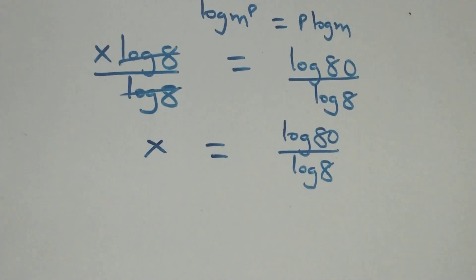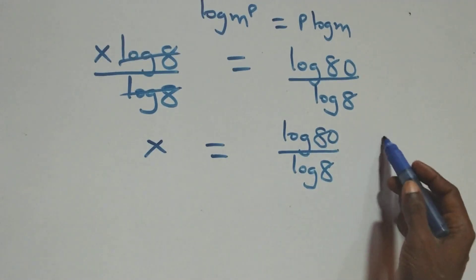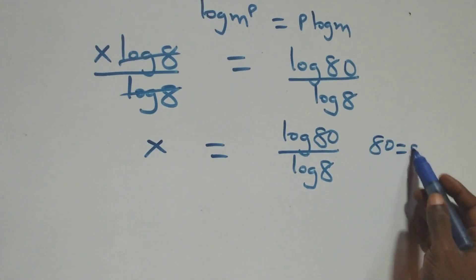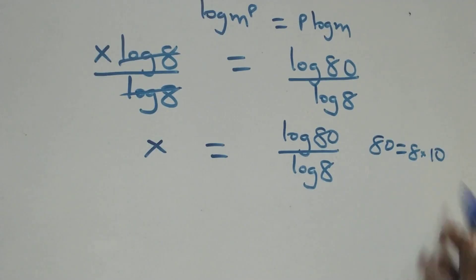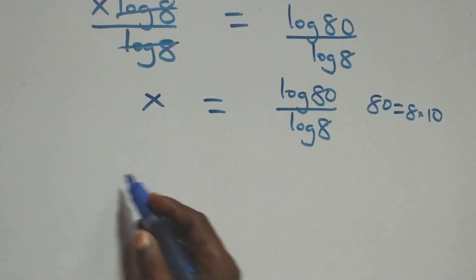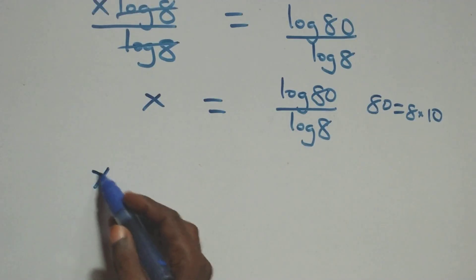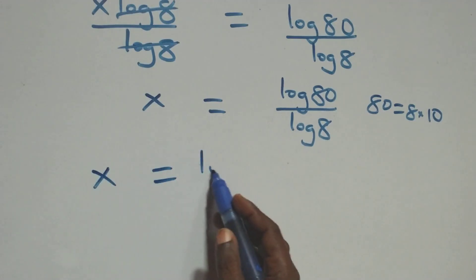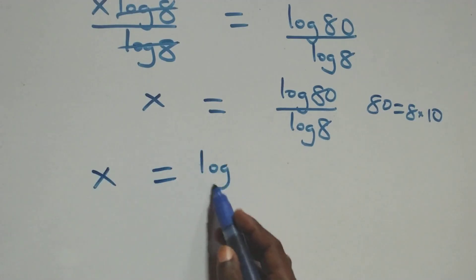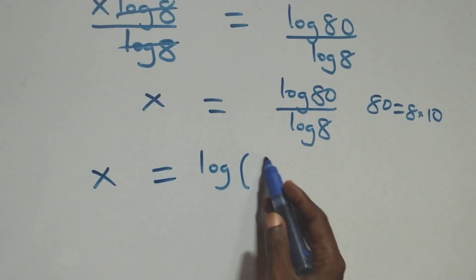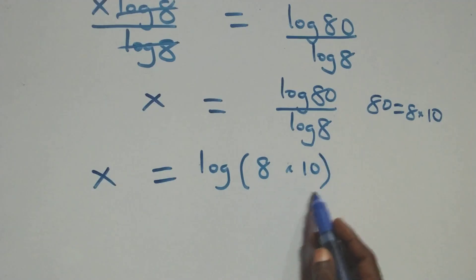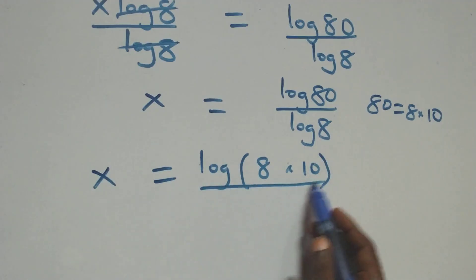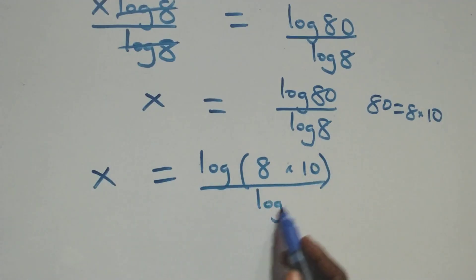The next step, we can express 80 as 8 times 10, which implies we have x equals to log(8 times 10) over log 8.